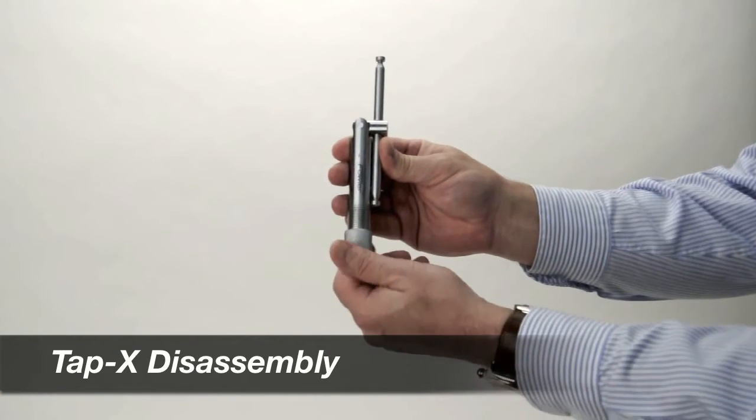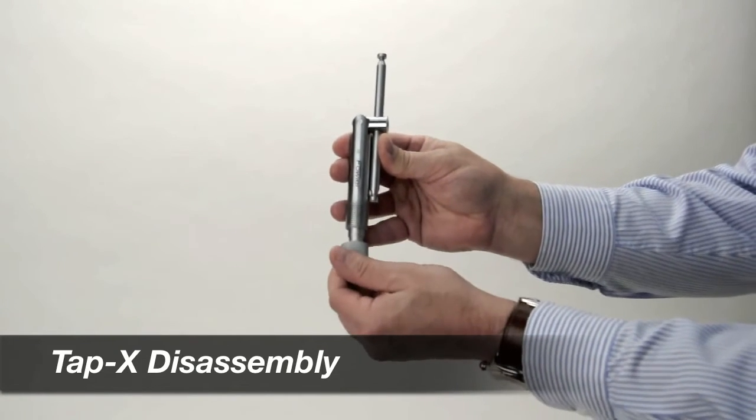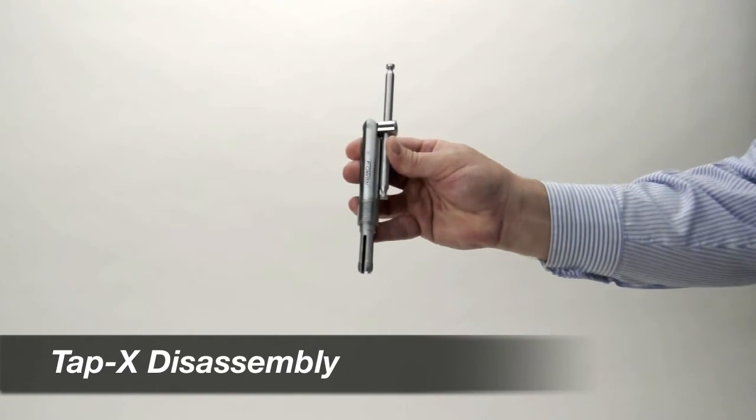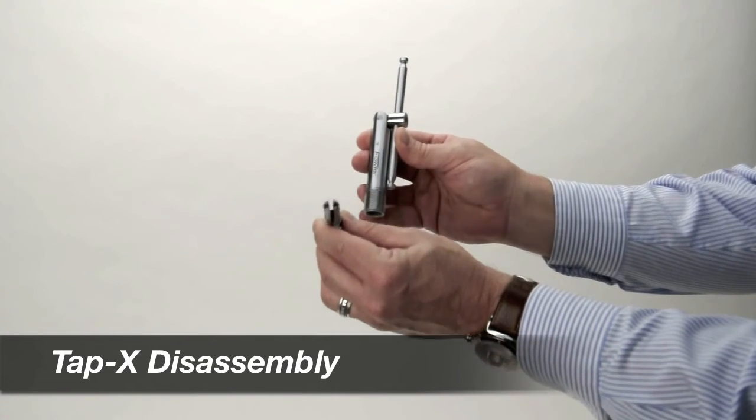To disassemble a TAP-X tap wrench for use, first remove the knurled sleeve. Once the sleeve is off, remove the collet. You'll notice the collet is two-sided.